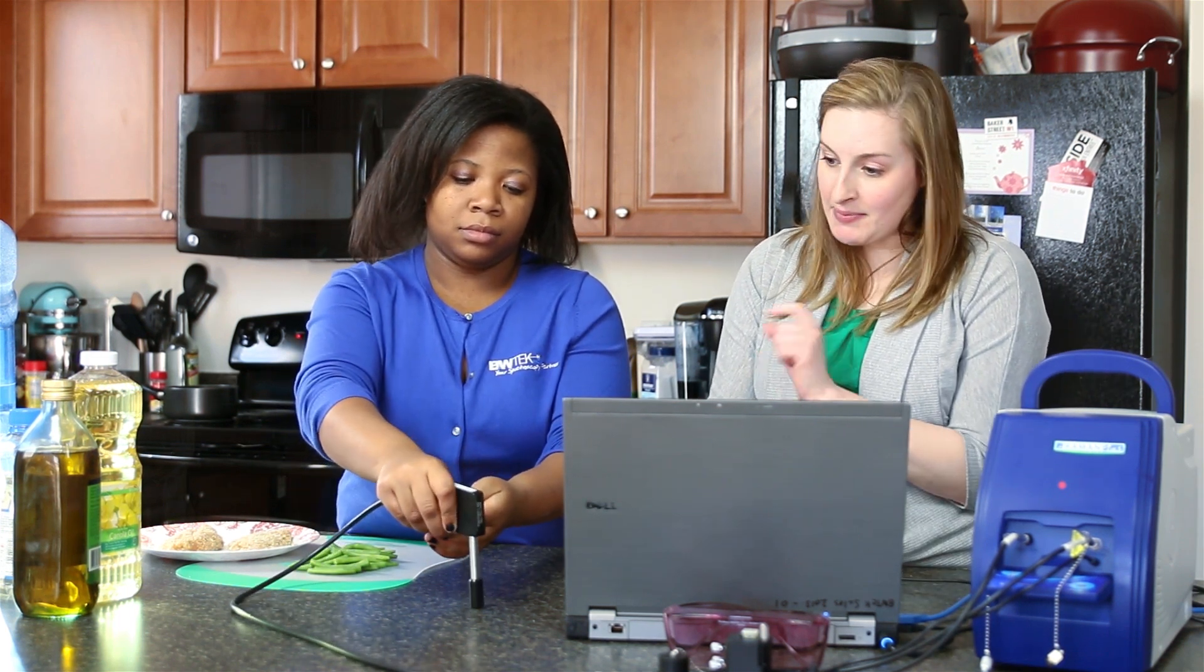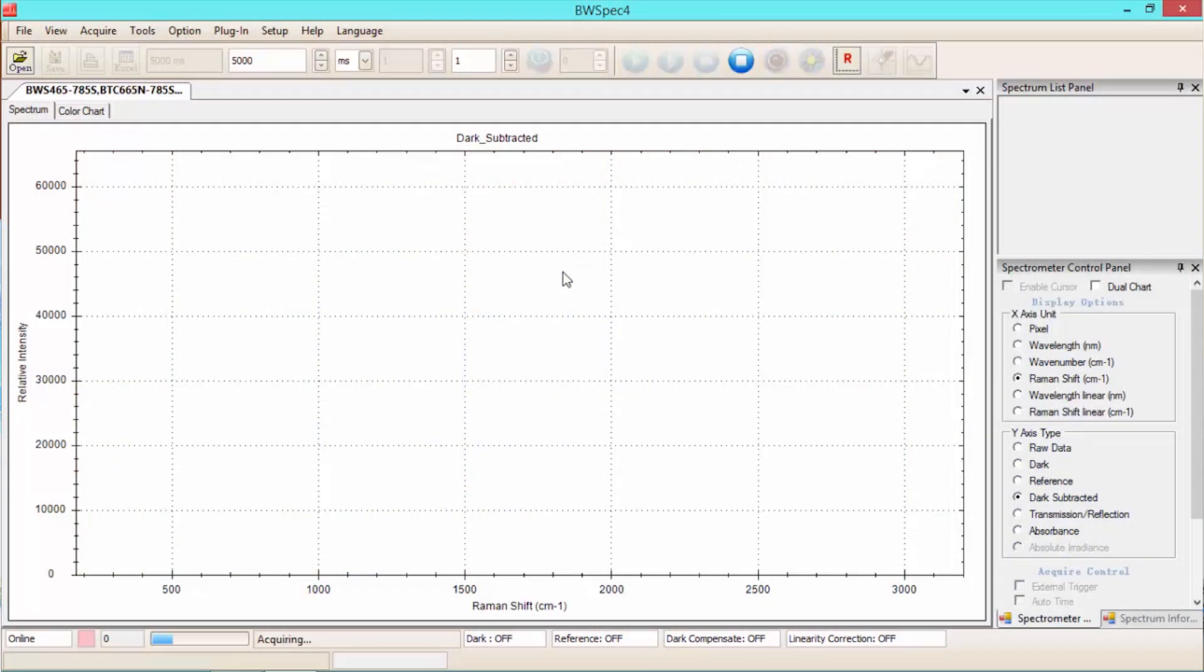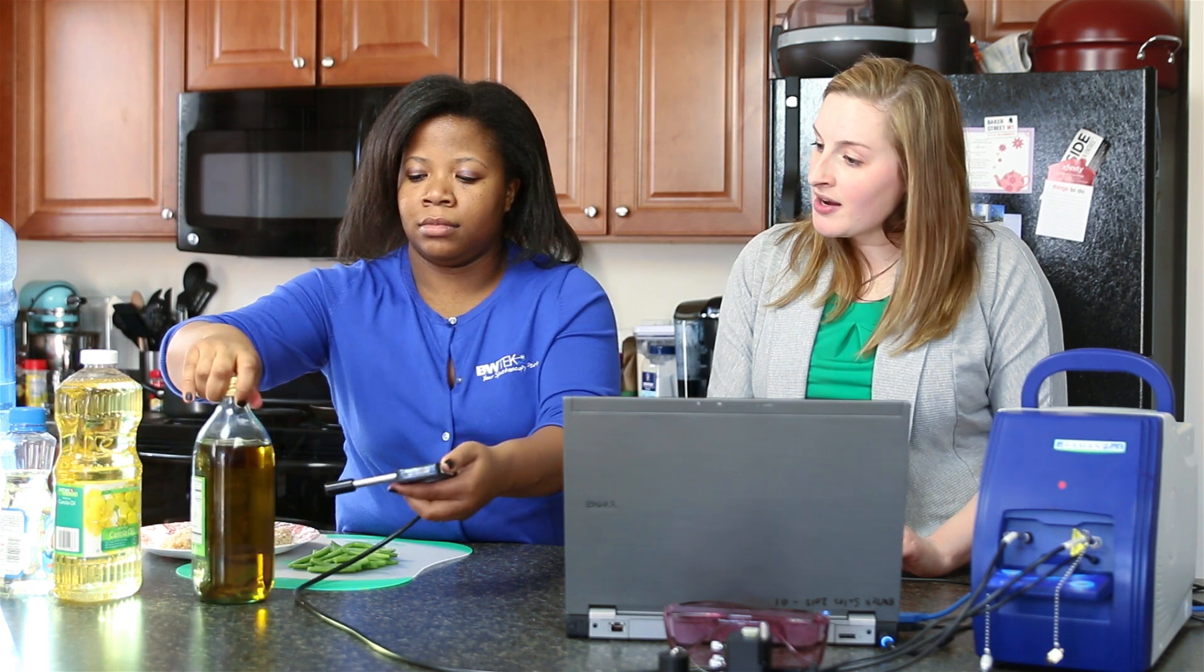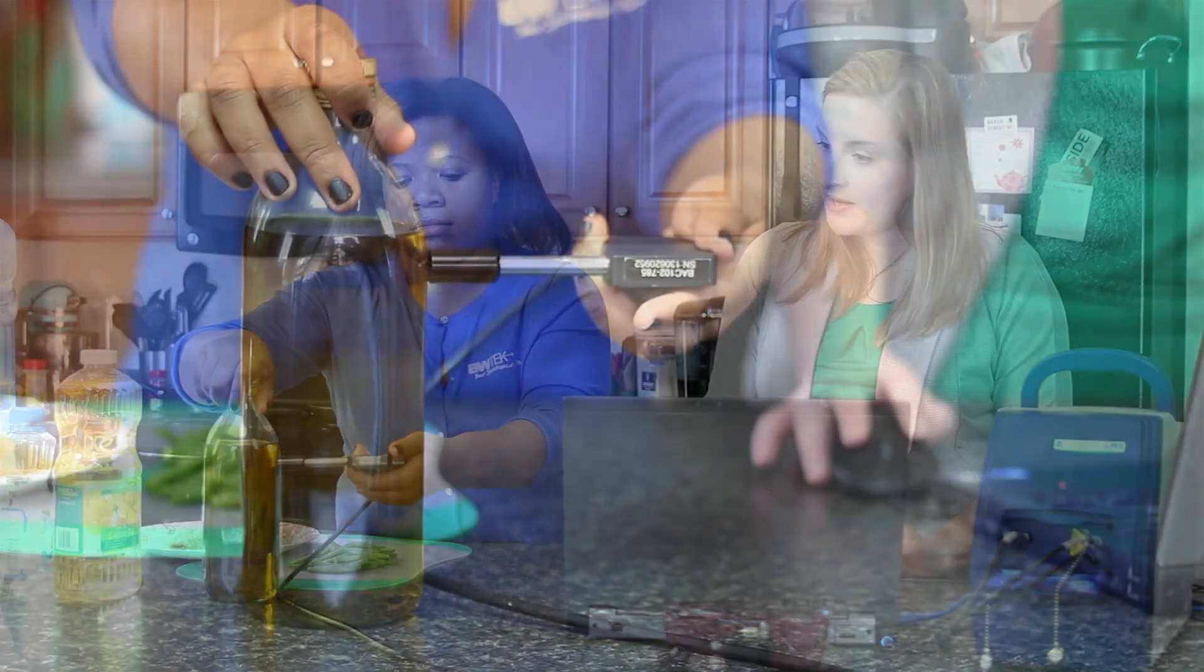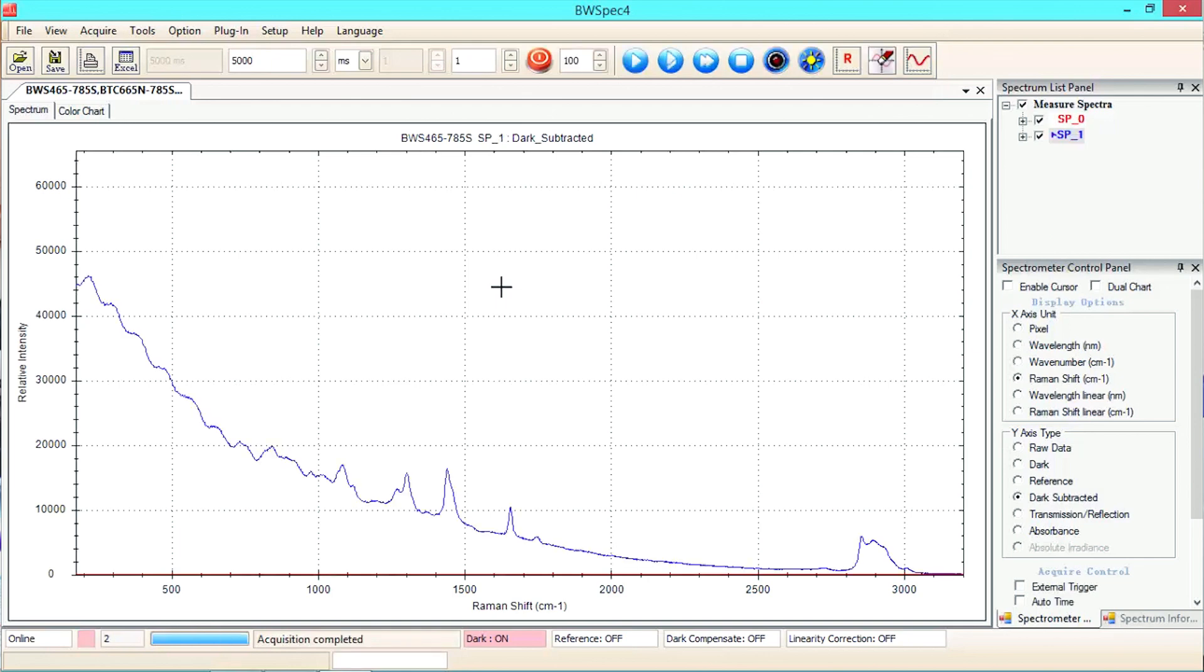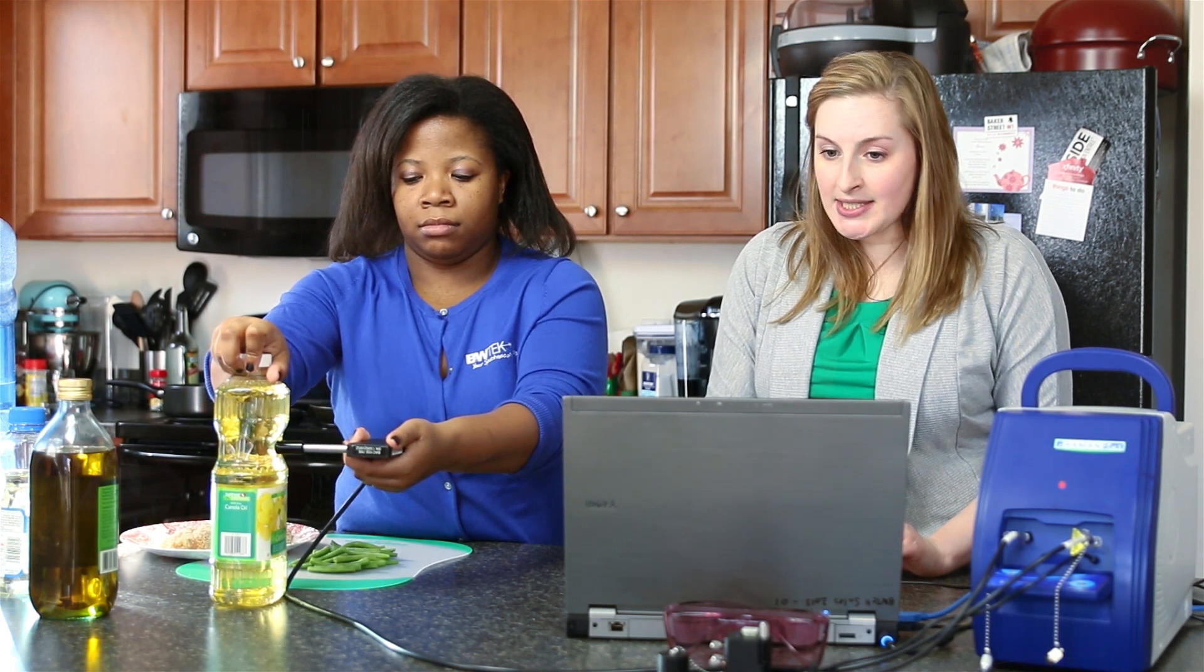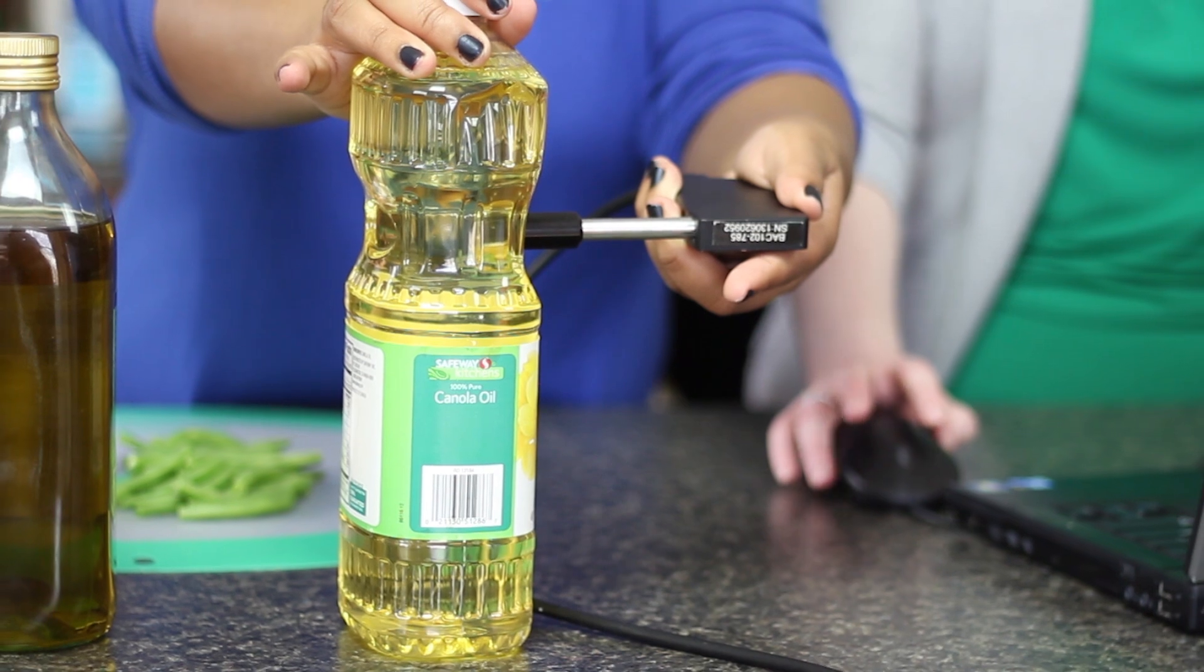So we'll take a dark scan first, make sure that the shutter is closed, and we'll go into BWspec here and take the dark scan. Okay, and then we can grab the olive oil there and take a scan of that as well. Okay, and then we'll take a scan of the next one. And we don't need to take dark scans in between because the integration time is the same.